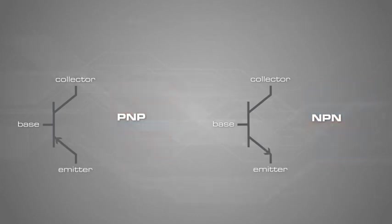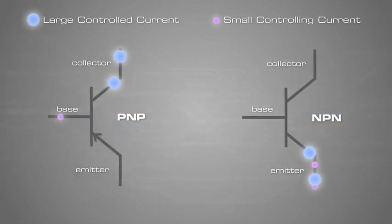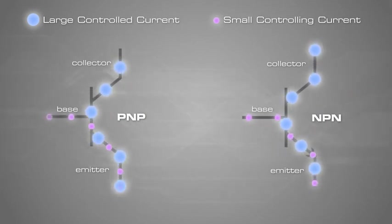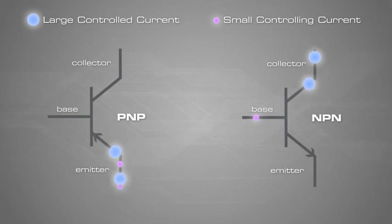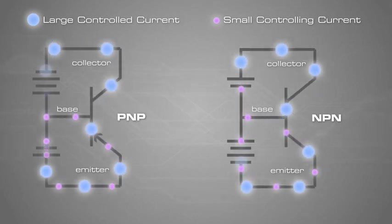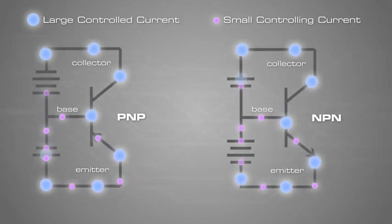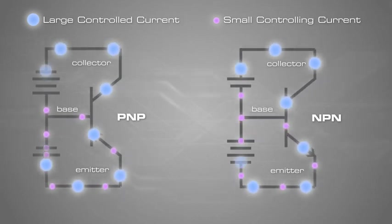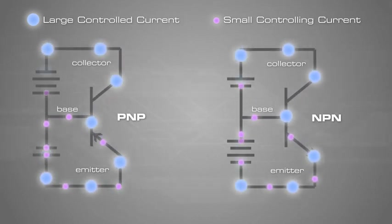The BJT functions as a current regulator by allowing a small amount of emitter-base current to control a larger collector-emitter current. In order for the BJT to properly function as a current regulator, the controlling base-emitter current and the controlled collector-emitter current must be going in the proper direction. This is achieved by applying the proper voltage biasing.